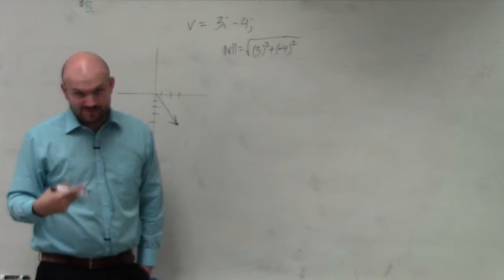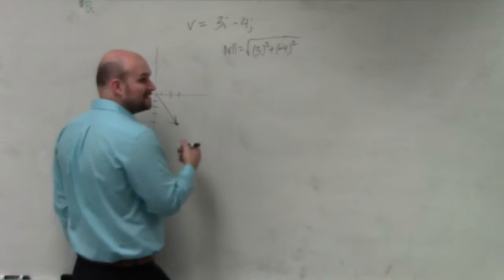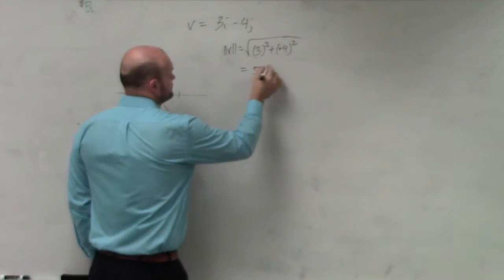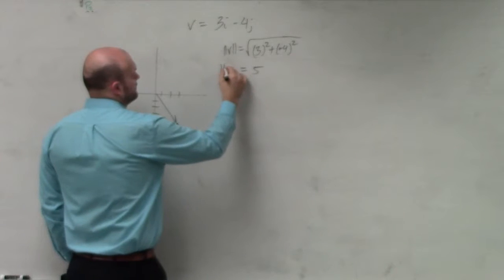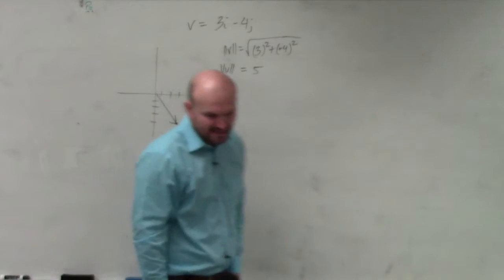You should know by using the Pythagorean triple, which we've been doing over and over, this magnitude is going to equal five. So the magnitude of this vector is equal to five.